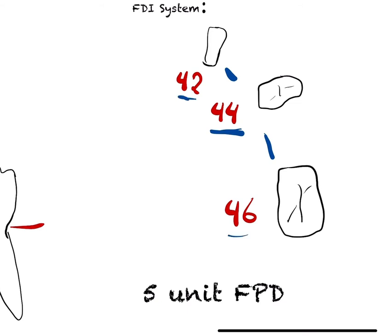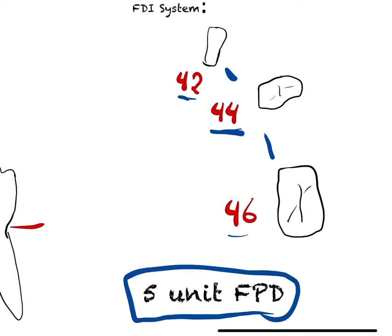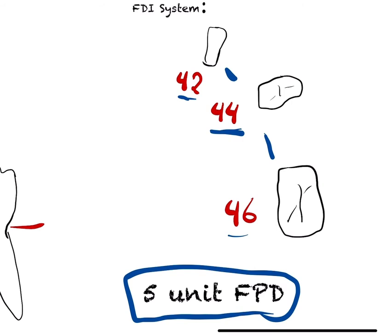These terminal abutments can build together a five-unit fixed partial denture: 4-2, 4-3, 4-4, 4-5, and 4-6 all together. And if we do a bridge, the fulcrum will be on 4-4.